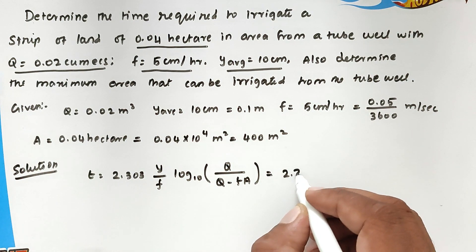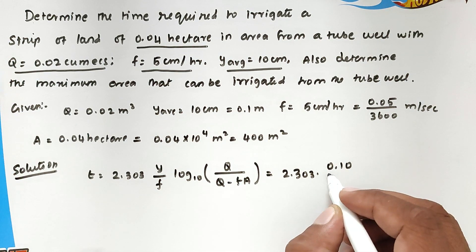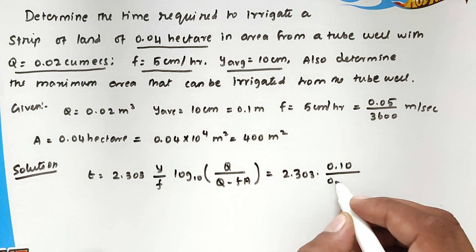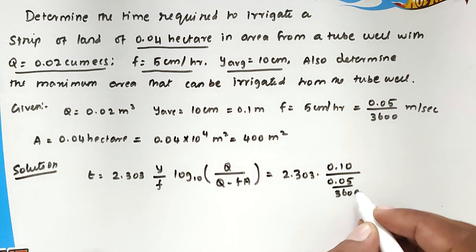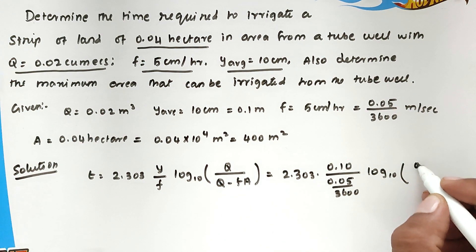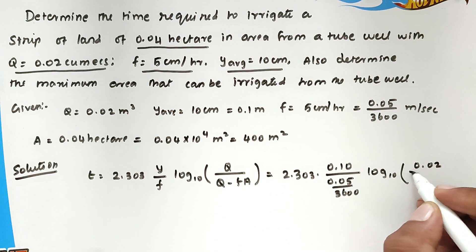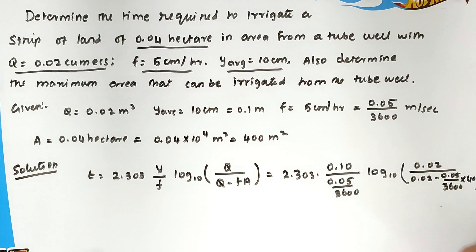Now we can substitute all the values. So 2.303 into Y value 0.10 divided by F value 0.05 divided by 3600, into log base 10, into Q value 0.02 meters cube divided by 0.05 divided by 3600 into 400.